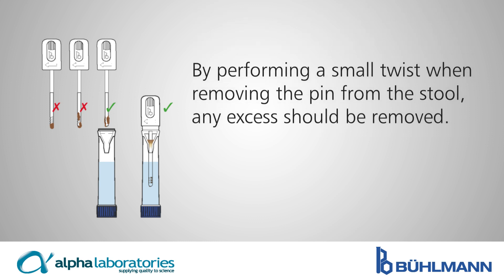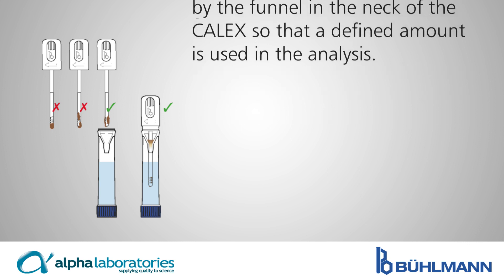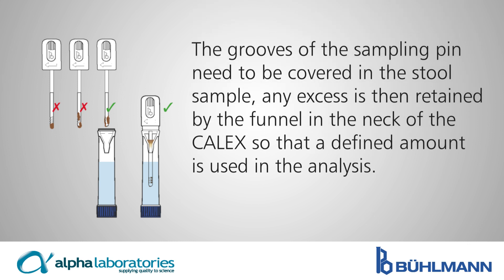By performing a small twist when removing the pin from the stool, any excess should be removed. The grooves of the sampling pin need to be covered in the stool sample. Any excess is then retained by the funnel in the neck of the calyx so that a defined amount is used in the analysis.